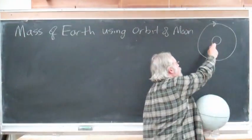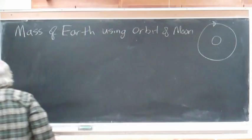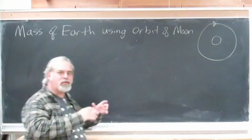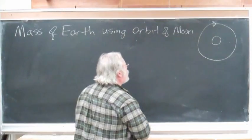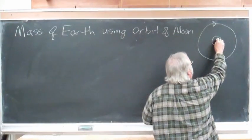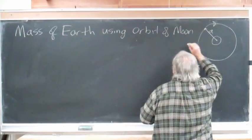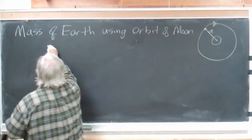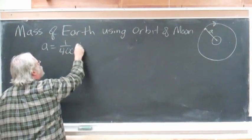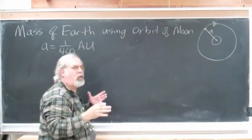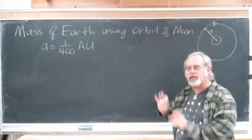So, here we have the Earth, and here's the Moon going around it, and what we need is the size of the Moon's orbit. Well, we call that distance from here out to the orbit, from the center of the Earth, A. And A is roughly 1/400th of an astronomical unit, because I know that the Sun is 400 times further away than the Moon, approximately.